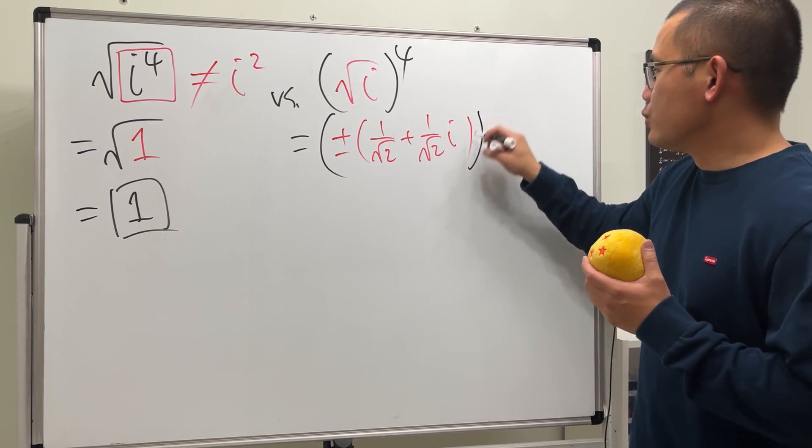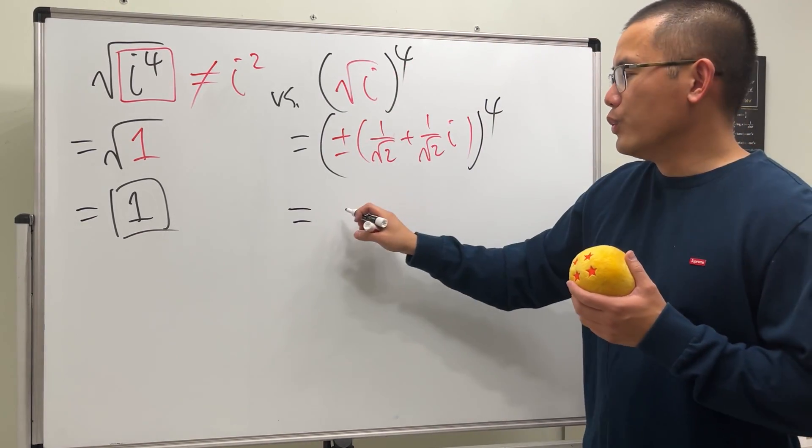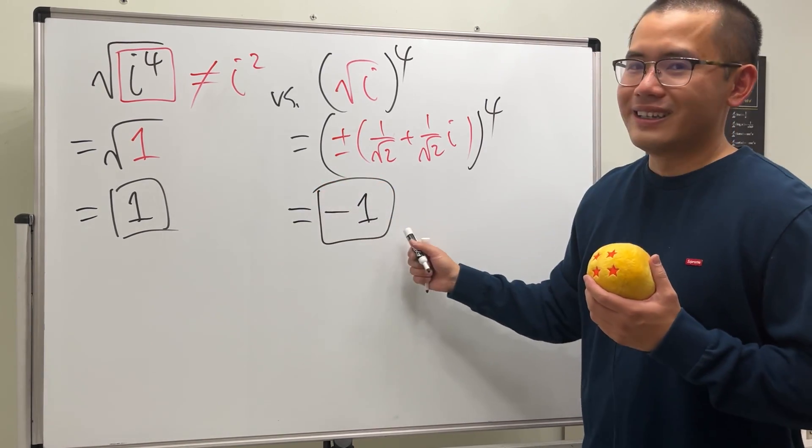Anyway, you take this, you raise that to the fourth power. And for this right here, you will end up with negative 1. And then we are done.